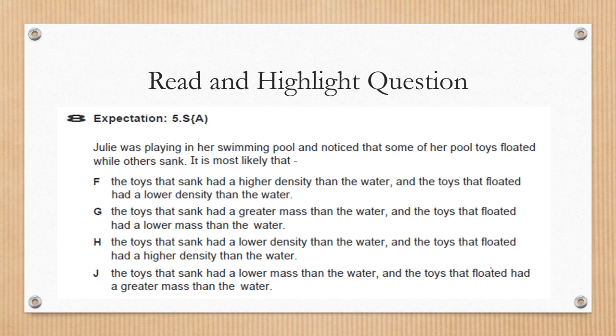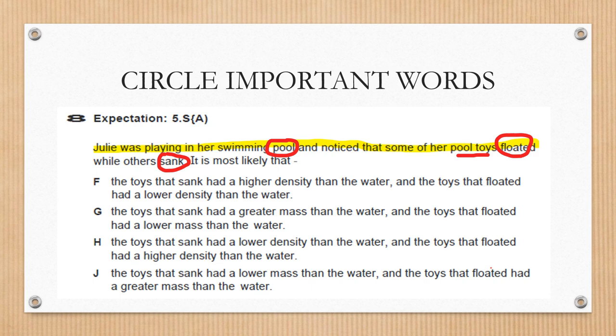I'm going to model question eight for you. Go ahead and pause the video and find week three question eight. Now I'm going to read the question to myself. Julie was playing in her swimming pool and noticed that some of her pool toys floated while others sank. It is most likely that... I need to highlight my question. Now I need to circle my important words. Some of the important words that I notice here are swimming pool, floated, sank.